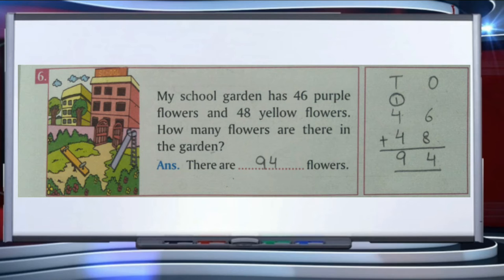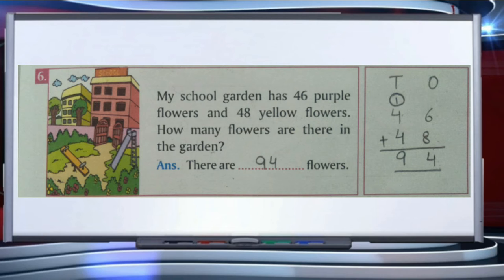Now we proceed to question number 6. My school garden has 46 purple flowers and 48 yellow flowers. How many flowers are there in the garden? We have to find the total number of flowers. We write tens and ones: 46 plus 48. We start the addition from the ones place: 6 plus 8 is equal to 14.